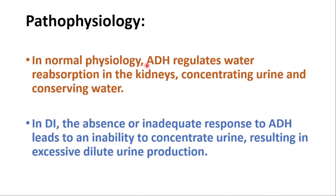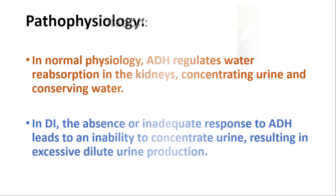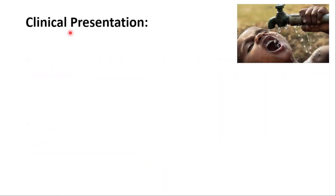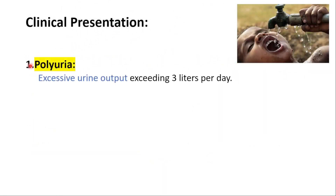In normal physiology, ADH regulates water reabsorption in the kidneys, concentrating urine and conserving water. In this condition, the absence of ADH — as seen in central DI — or inadequate response to ADH — as seen in nephrogenic DI — leads to an inability to concentrate urine, resulting in excessive dilute urine production.